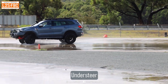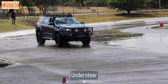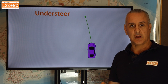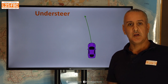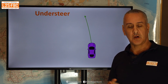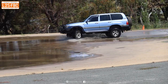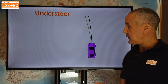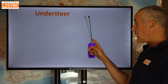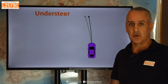Now let's look at understeer and how the circle of traction explains it. When a car goes around a corner, the driver turns the steering wheel at a certain angle and the car should follow that exact line. Normally the car runs a little bit wider or tighter. When it runs wider, that's understeer — the car pushes on and runs wide, describing a wider arc than the ideal neutral line.